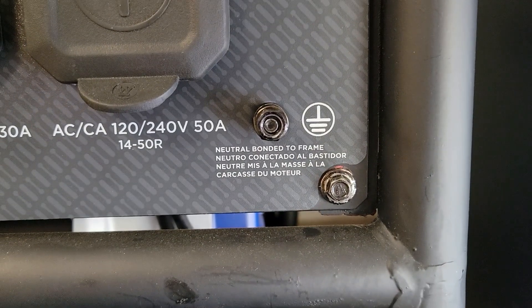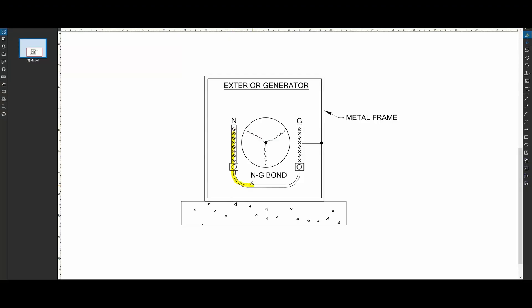If you have this sticker displayed on your generator, it means there's a bonding jumper connecting the neutral, ground, and metal frame together.